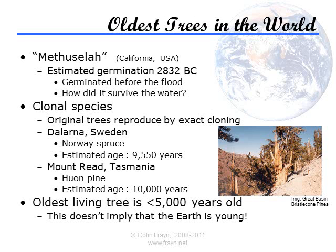Creationists sometimes claim that the oldest trees in the world are less than 6,000 years old. It's probably not a true comment, but it's irrelevant — you can't date the Earth based on the age of its oldest living thing. The accepted age of 5,000 years to the oldest living tree on Earth, a Californian bristlecone pine named Methuselah, means that there was plenty of time for it to germinate after the year in which the young Earth creationists believed the Earth was formed. However, its age does certainly push it back before the Flood, so somehow Methuselah and other trees of a similar age managed to survive the Flood that wiped out pretty much every other living thing on Earth.